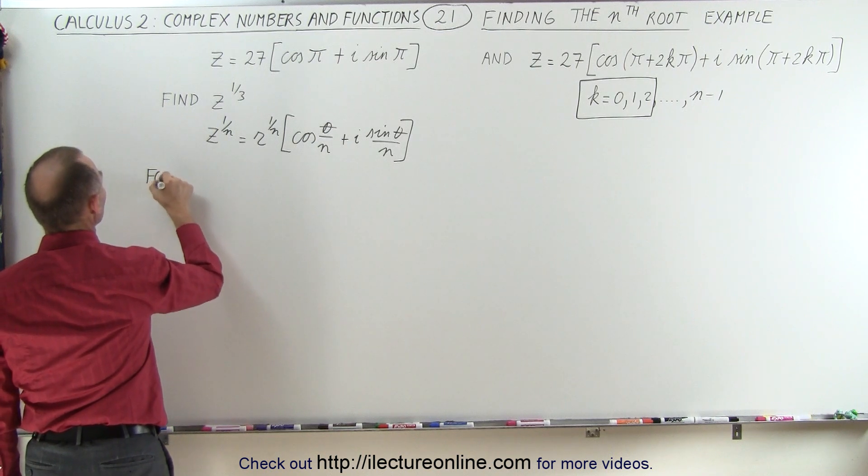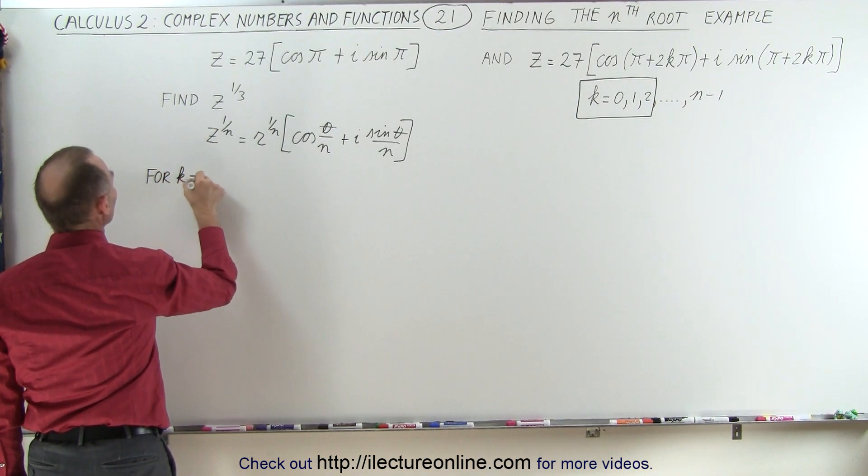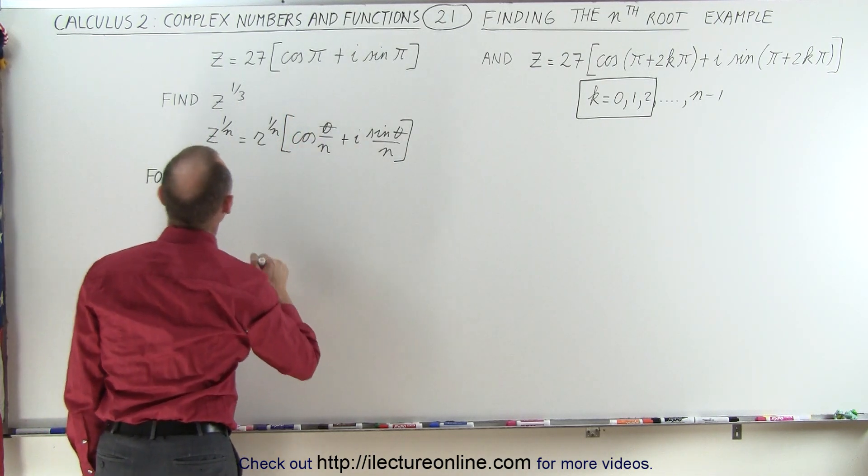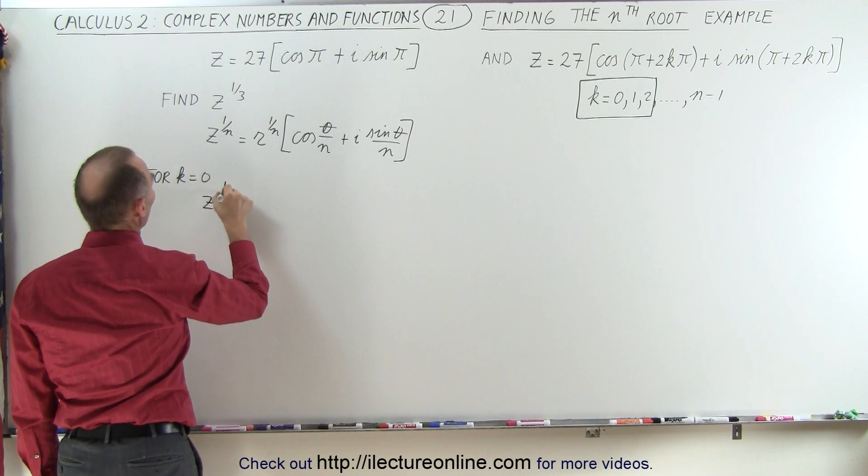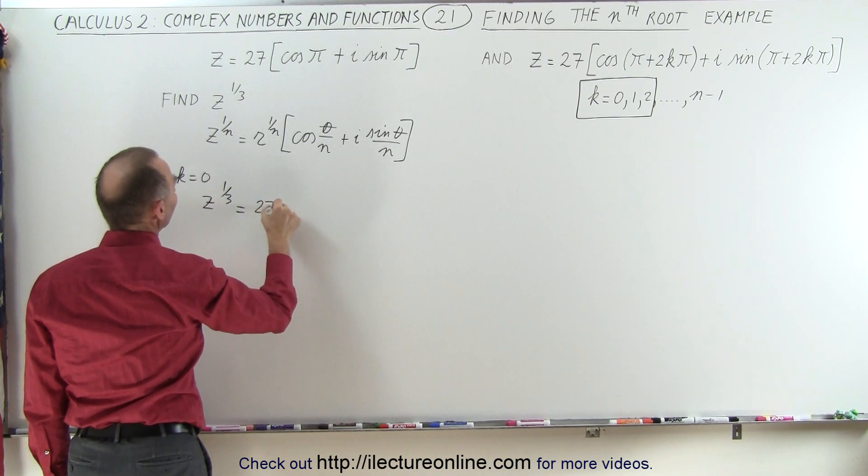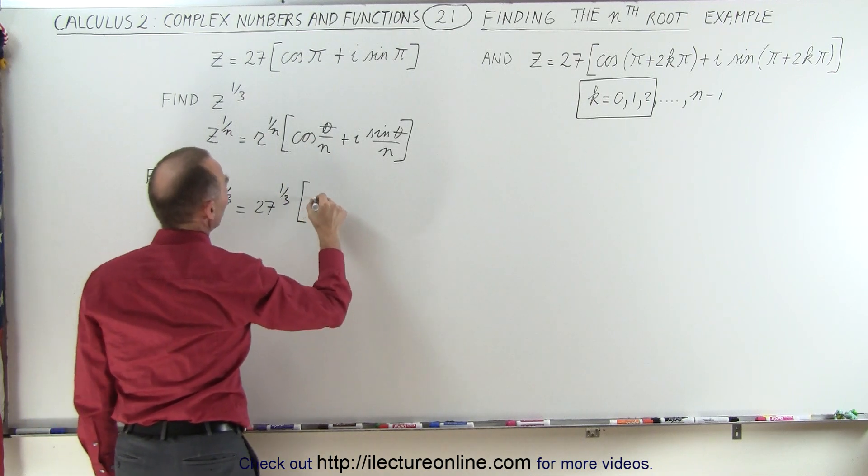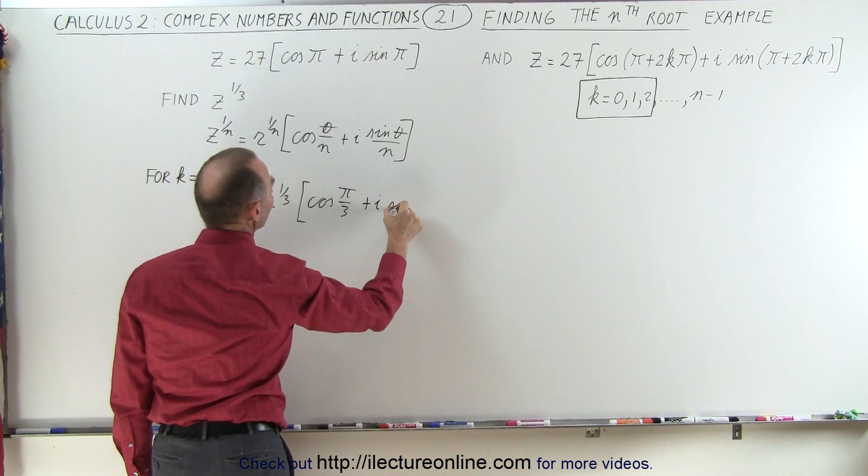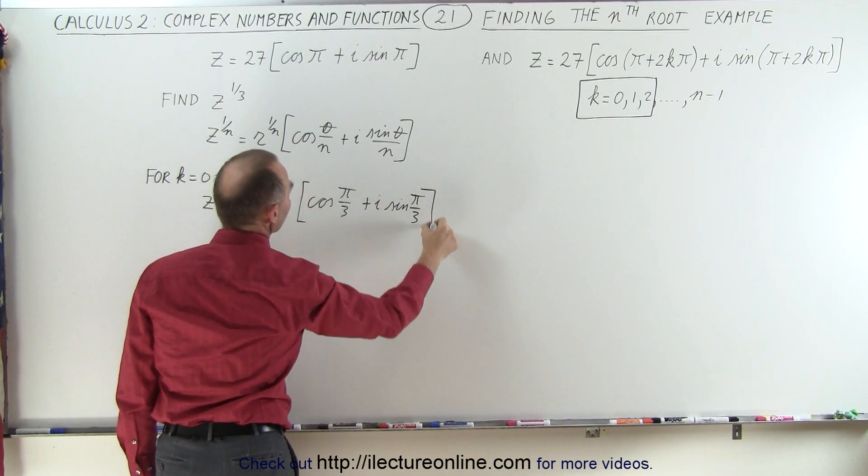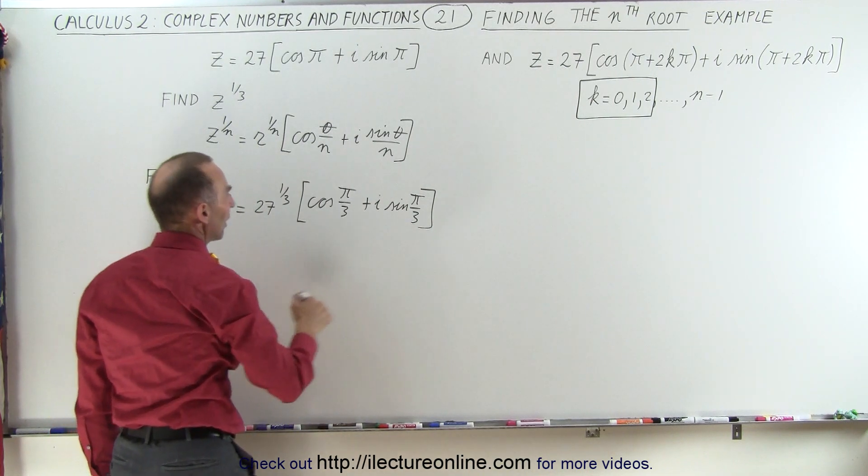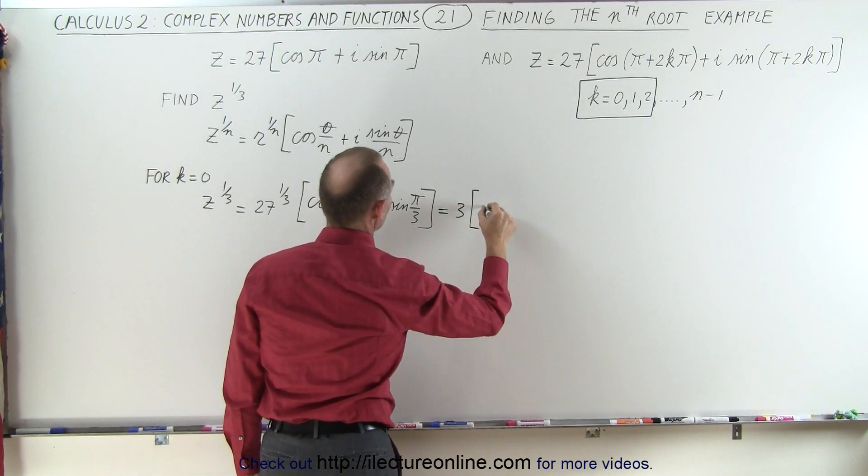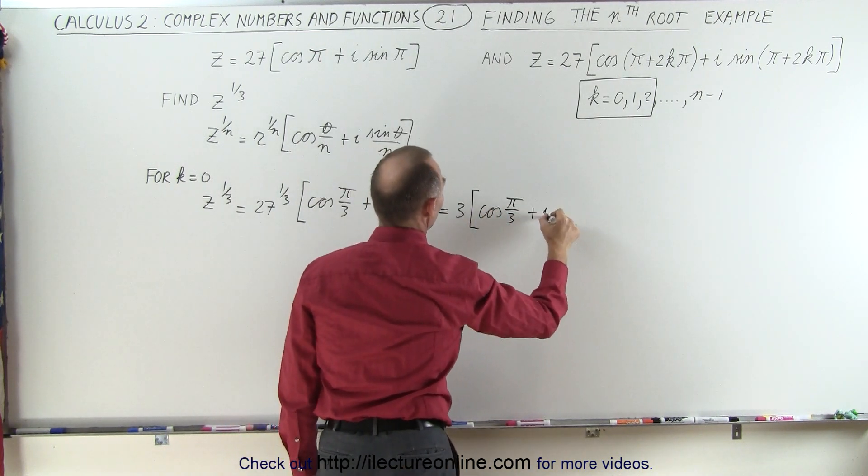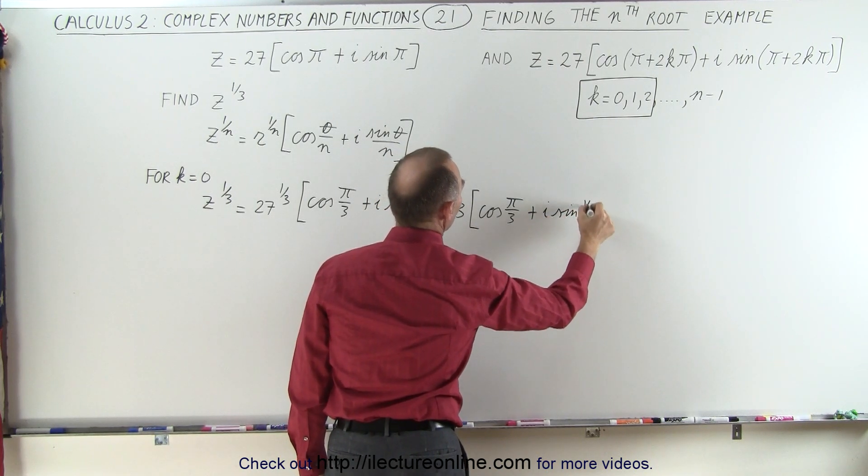So we're going to first do it for k equals 0. When k is equal to 0, we take the number as is, we don't add anything to the angle. So we could say that z to the 1/3 power is equal to 27 to the 1/3 power times the cosine of π divided by 3 plus i times the sine of π divided by 3. And of course 27 to the 1/3 power is equal to 3 times the cosine of π over 3, which is 60 degrees, plus i times the sine of π over 3.